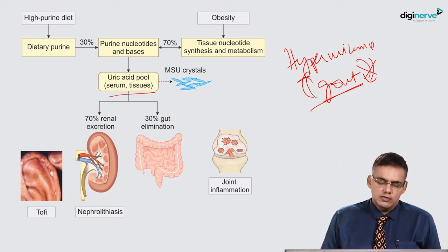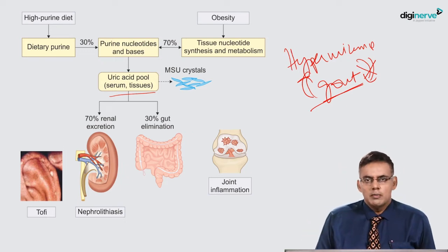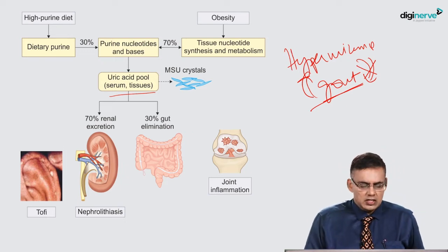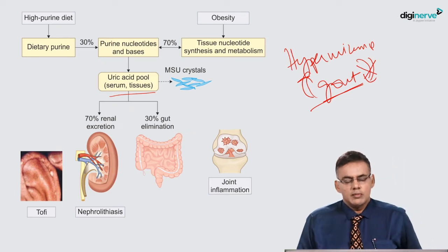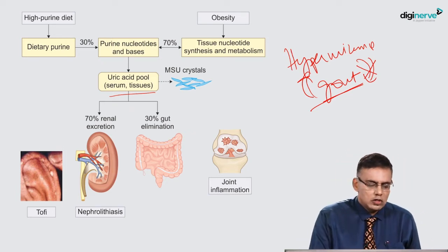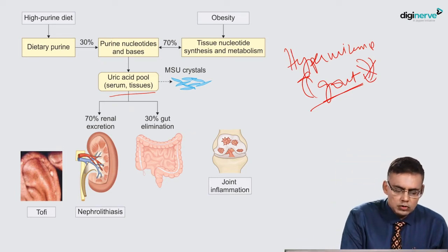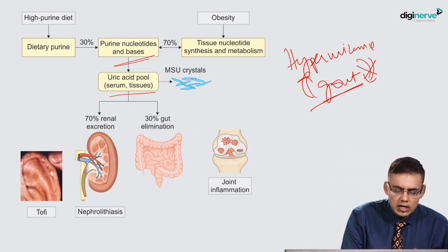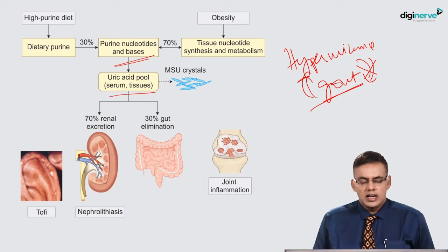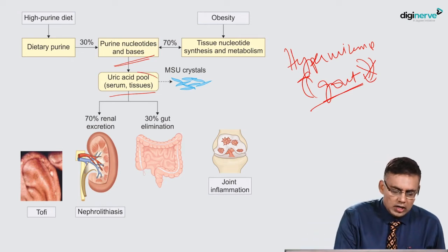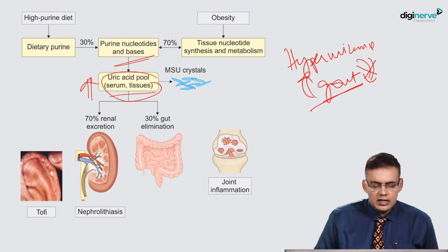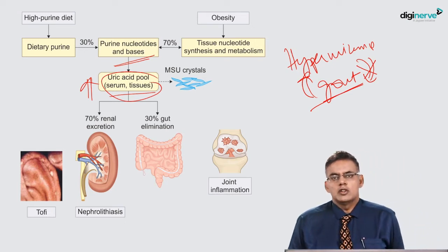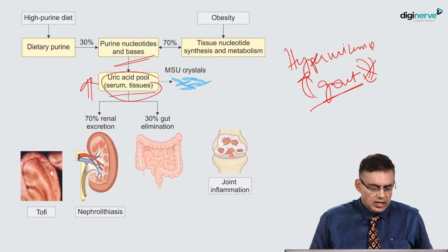In addition, when we have obesity in a patient, there is tissue nucleotide synthesis and metabolism which also contributes to purine nucleotides and bases. All these lead to an increase in uric acid and result in the formation of MSU crystals.